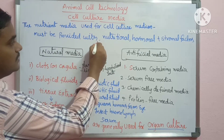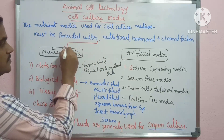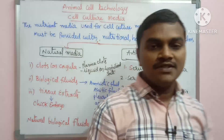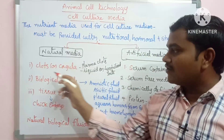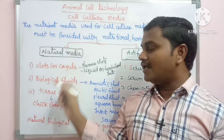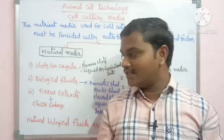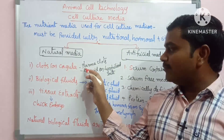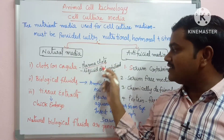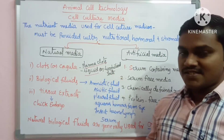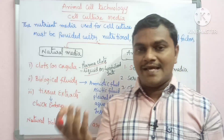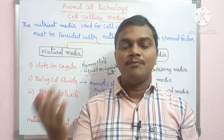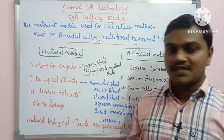Generally, media in cell culture is of two types: natural media and artificial media. Natural media includes clots or coagula. These may be plasma clots, or in a liquid phase — plasma and liquid phase or lipid phase.